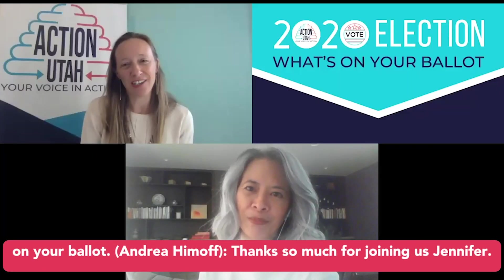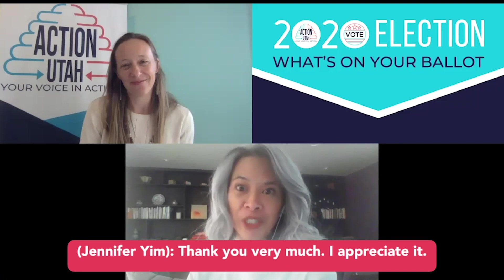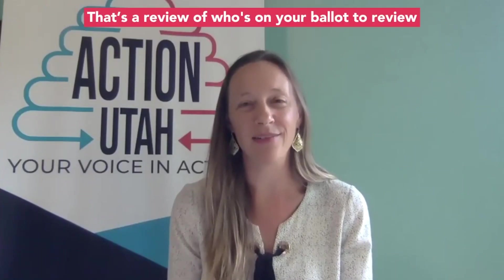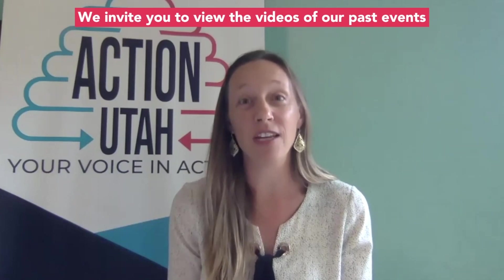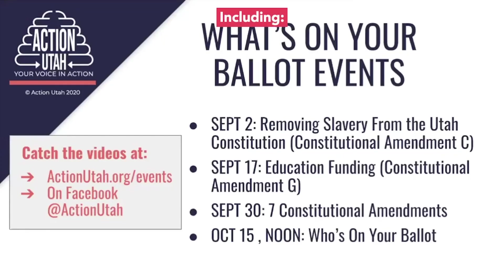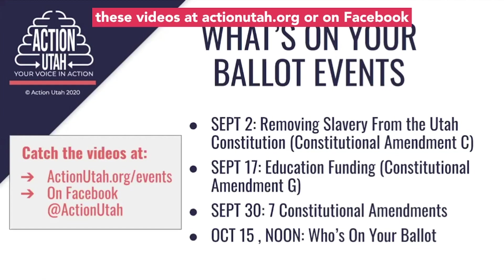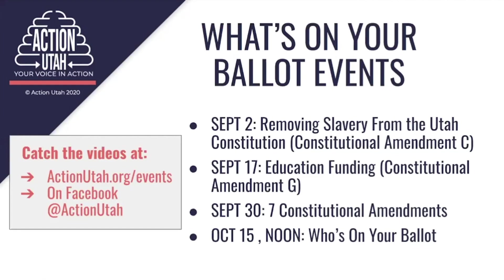Thank you so much for the work that you do. Can you remind voters one more time where they can go for information about judges for this election? Please go to judges.utah.gov and click on "Know Your Judges" to find out more about all the judges on your ballot. Thanks so much for joining us, Jennifer. Thank you very much, I appreciate it. That's a review of who's on your ballot. To review what's on your ballot and specifically the seven statewide constitutional amendment questions, we invite you to view the videos of our past events, including removing slavery from the Utah Constitution or Constitutional Amendment C, education funding or Constitutional Amendment G, and the seven constitutional amendments. You can find these videos at actionutah.org or on Facebook at Action Utah.